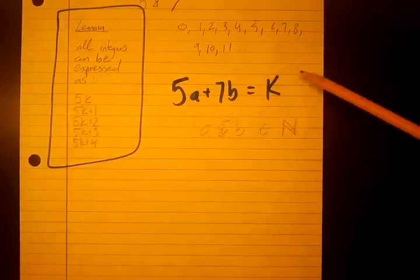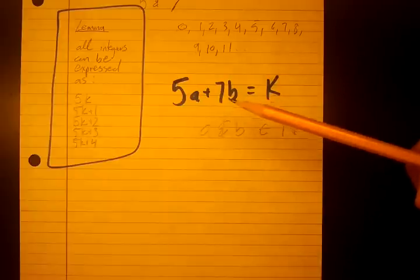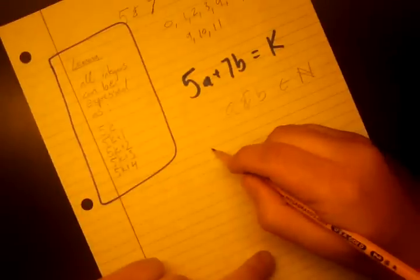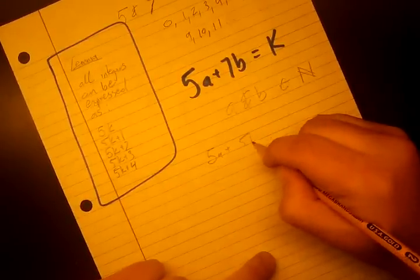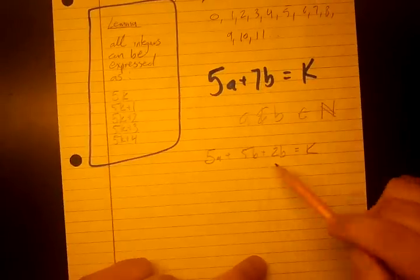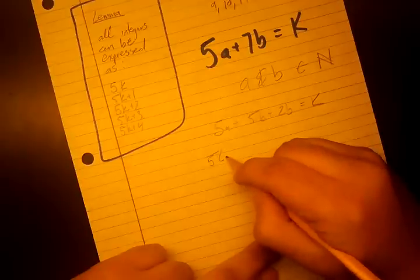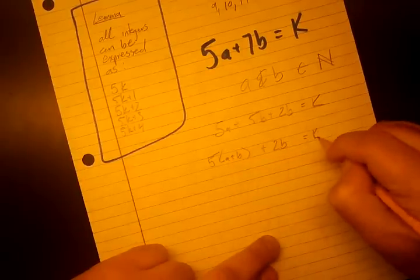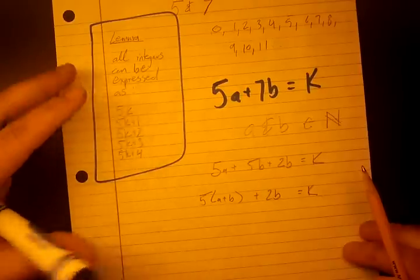So every number we can form using A and B as natural numbers is a possible number. So the highest one that we can't form is the Frobenius number. So let's rewrite this in a different way. I'm going to rewrite this as 5A + 5B + 2B = K. So I split the 7B into 5B and 2B. I'm going to group the 5, so it's going to be 5(A+B) + 2B = K. Now we see how this is starting to resemble the 5K plus some number.